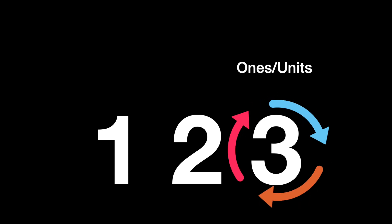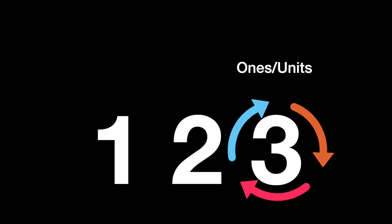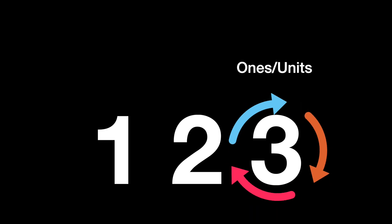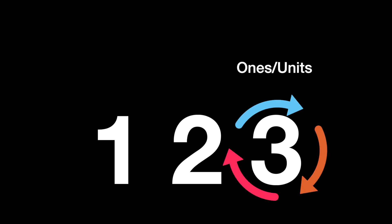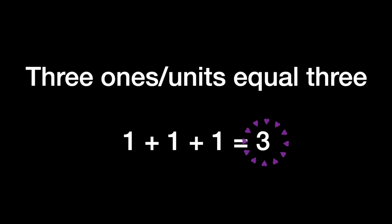Let's look at the number 123. The three is in the last column, which is known as the ones place. And because it's in the ones place, the value of the three is just three.